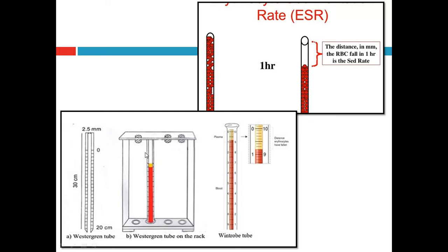To read the ESR result using the Westergren tube, the tube is placed on a rack — generally a rack with a timer that alarms after 1 hour. After 1 hour, we check how far the RBCs have settled from the top marking. For example, if the marking started at 0 and the RBCs have settled to the 9 mm mark, the ESR reading is 9 mm per hour.